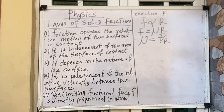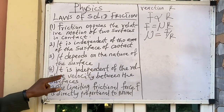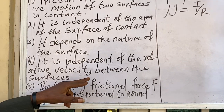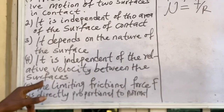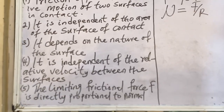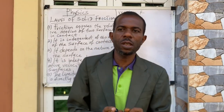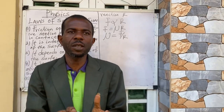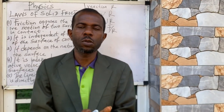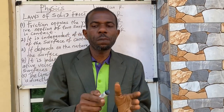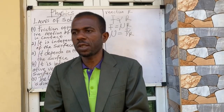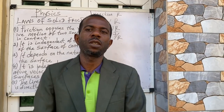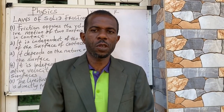Number four: friction is independent of the relative velocity between the surfaces. The relative velocity refers to the movement of the body, but friction does not depend on how fast the other body is moving — it only depends on the roughness of that surface.